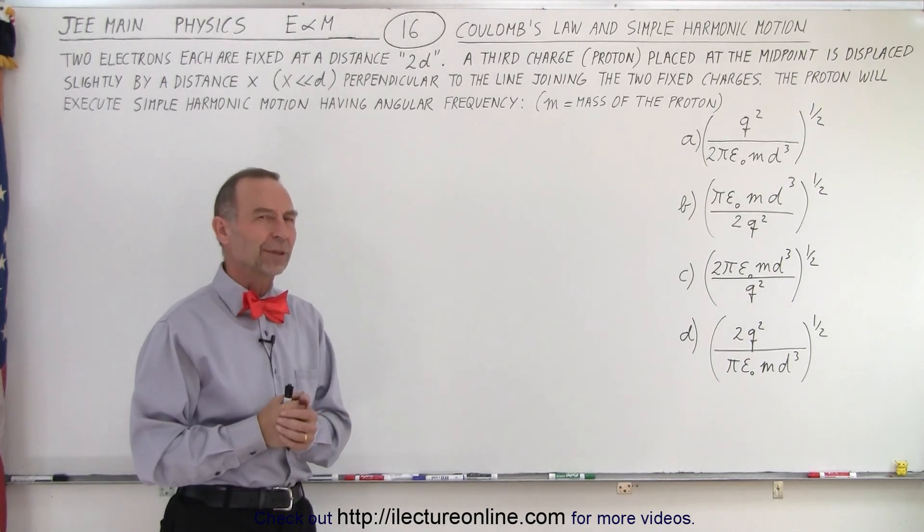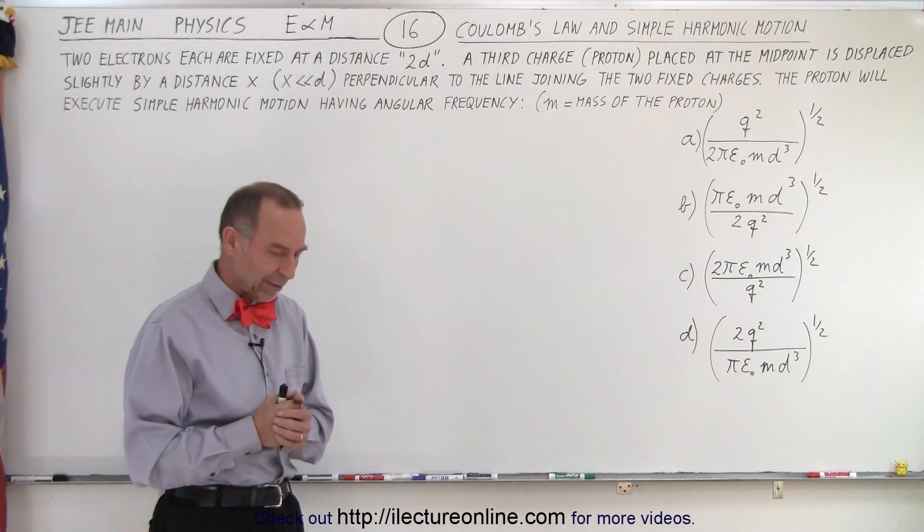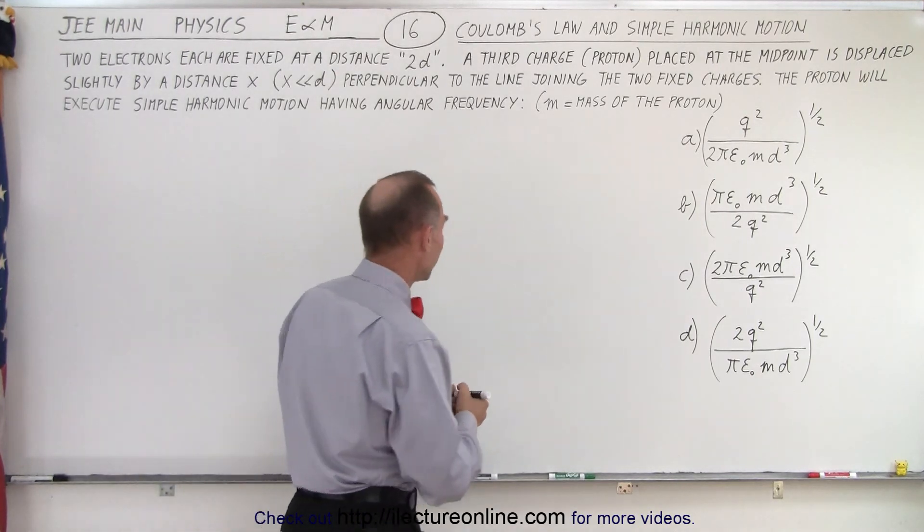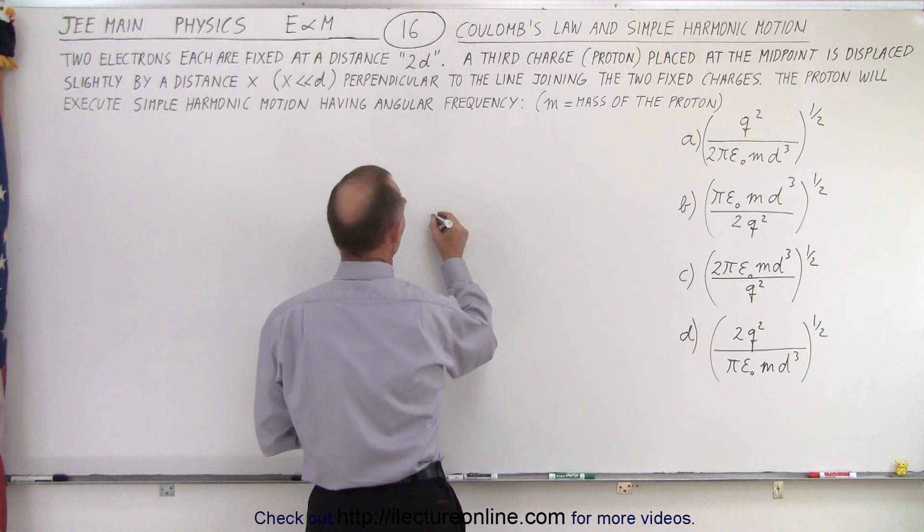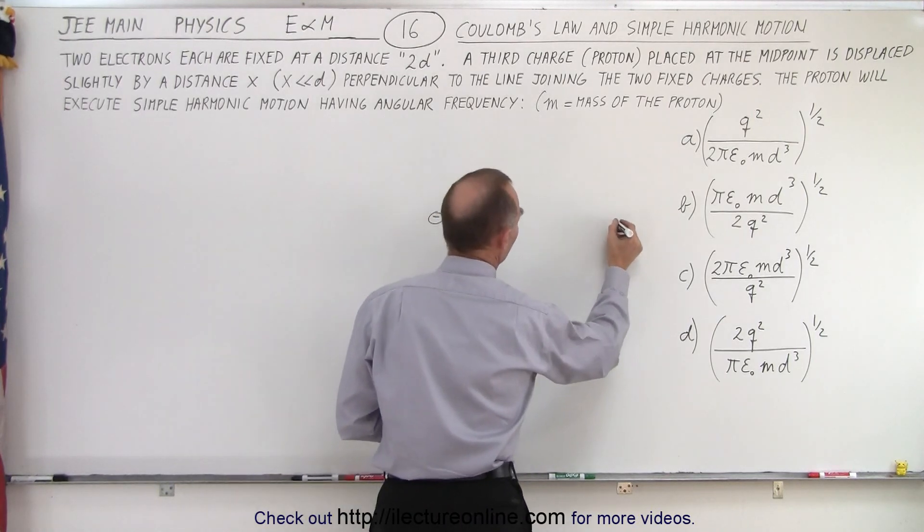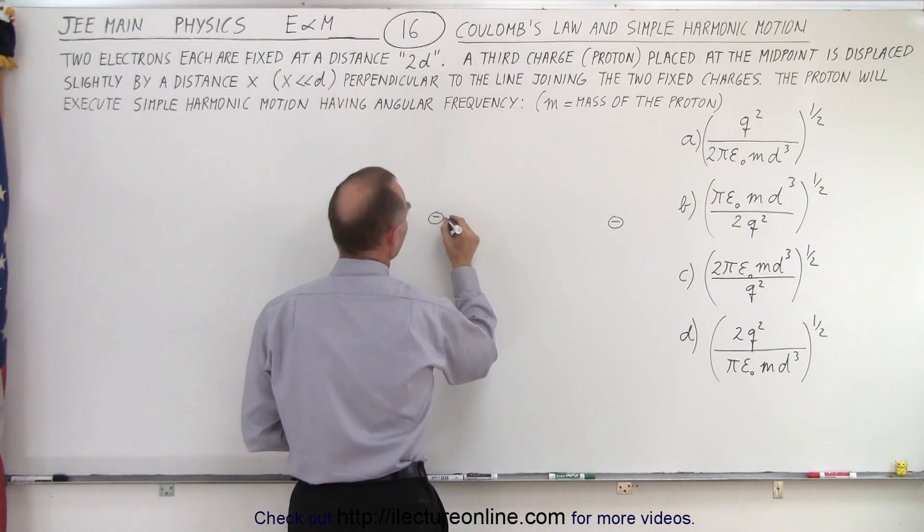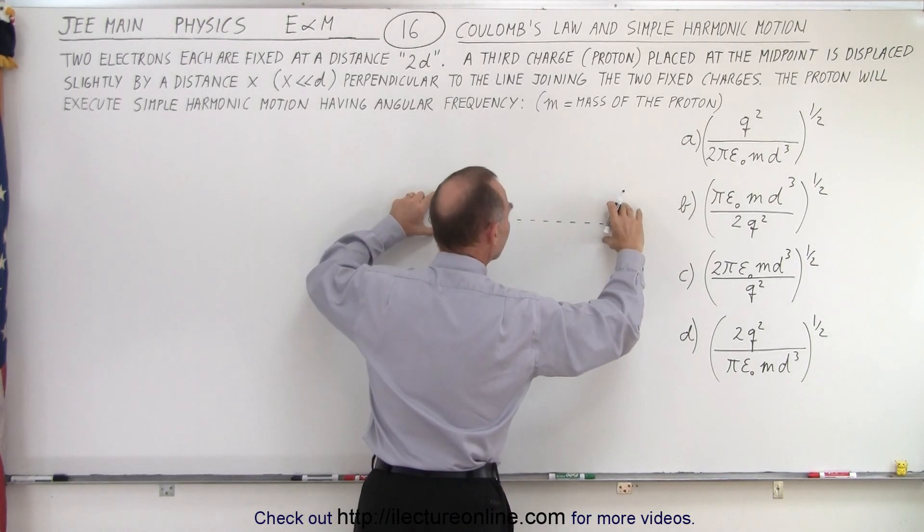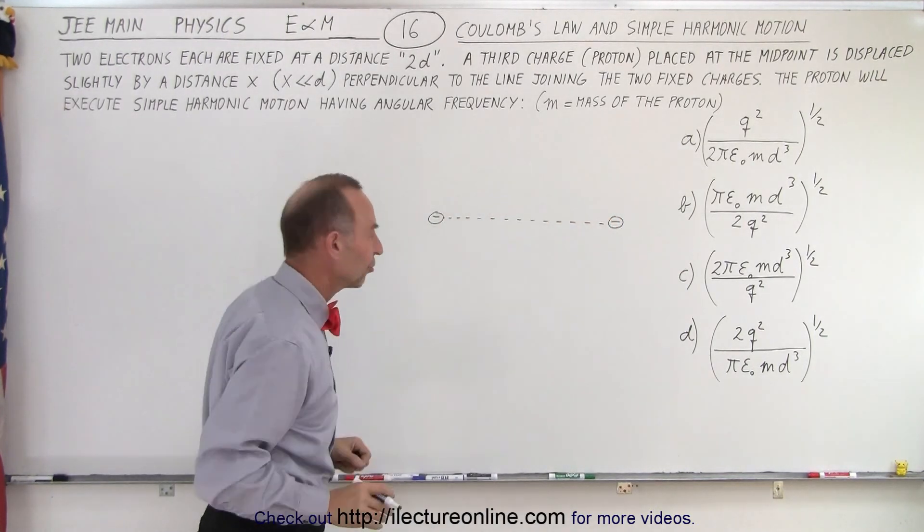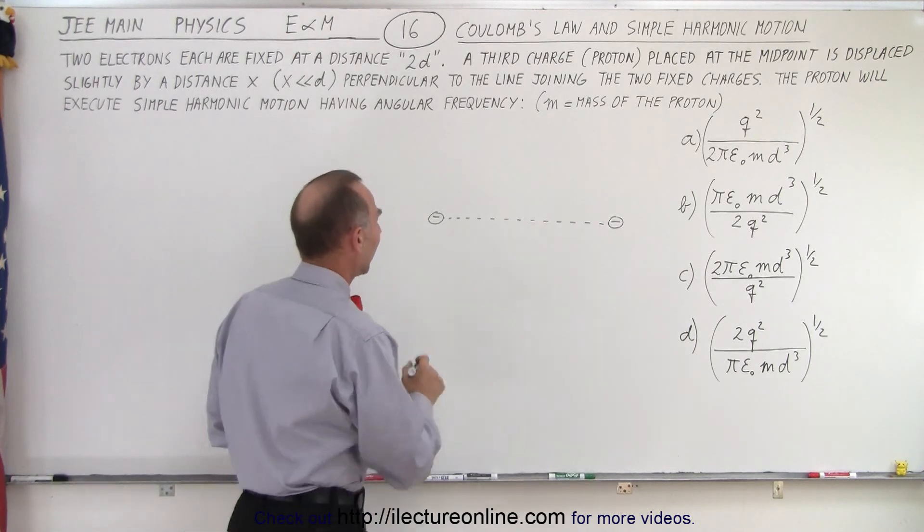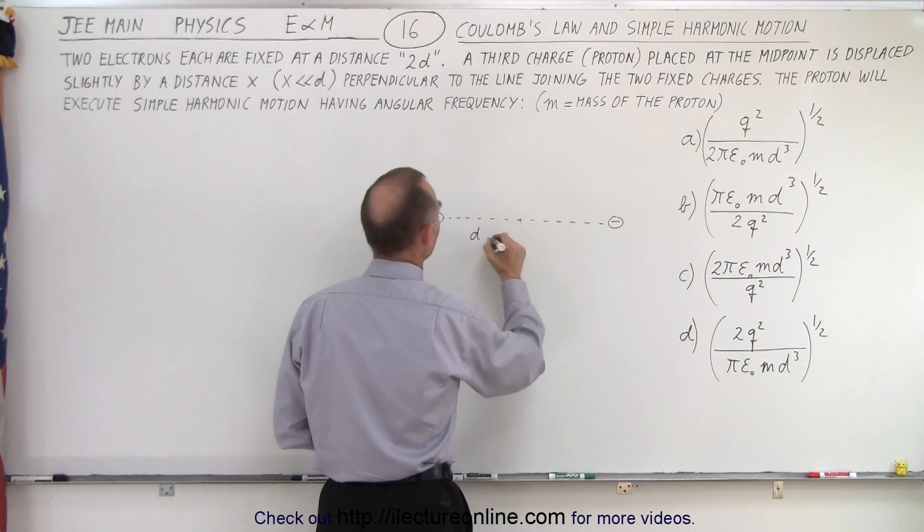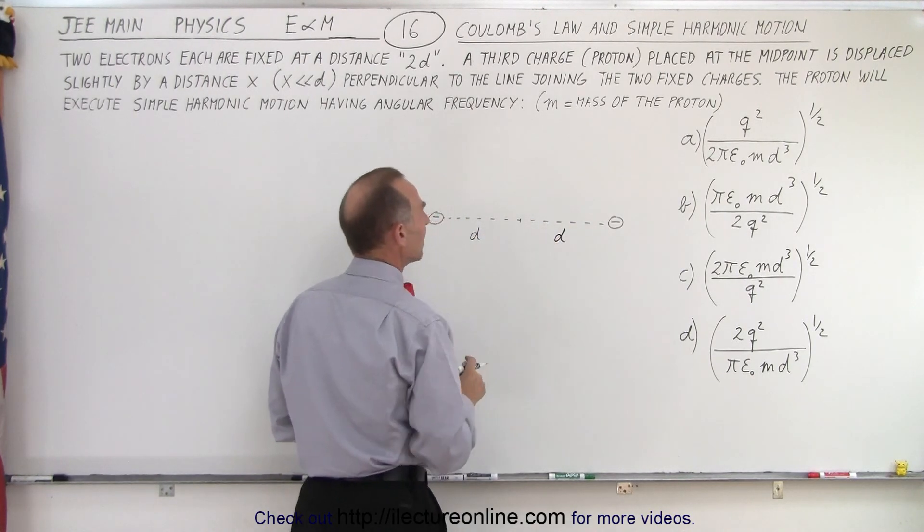Where do we start with this? Well, the first thing to do is to draw some diagram that will help us understand what is happening. So we end up with two electrons, so here's one electron over here, another electron over there, they're connected to something so that they cannot move, so they're fixed in place, and they're a distance 2D apart from one another. So if I take the halfway point right there, so this would be distance D, this is distance D.